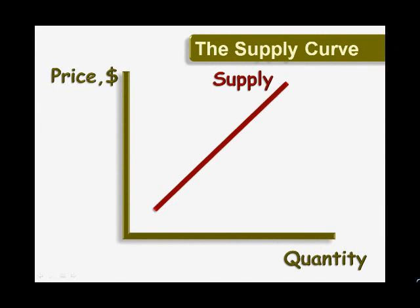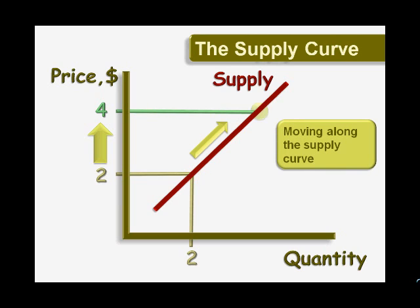The supply curve relates prices to quantity supplied. According to this curve, if the price is $2, suppliers will offer only 2 units. If the price rises to $4, more money can be made if more is offered, so we move up along the supply curve, increasing the quantity supplied. Next, we'll bring supply and demand together to see how a market works.